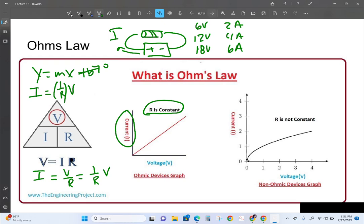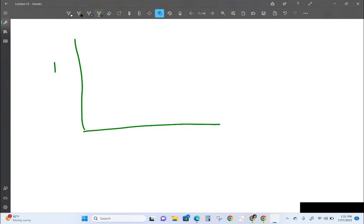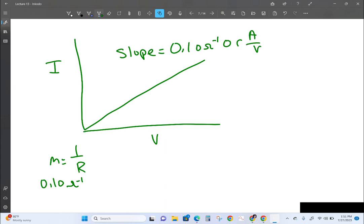For example, if we had a graph of current versus voltage and the slope was 0.10, then that would mean the slope equals 1 over R. 0.10 ohms to the negative 1, or amps all over volts, would equal 1 over R. So we take the inverse of everything. R would equal 1 over 0.10, which would give us 10 ohms. That means that device is an ohmic device.